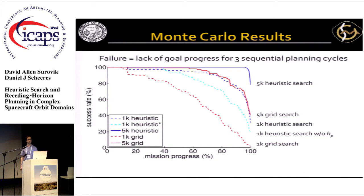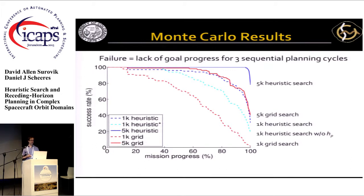To quantitatively show how all of these things are affecting this, I ran Monte Carlo simulations of mission plans using different search resolutions and different features turned on or off. If you use a good resolution and the heuristic with all the bells and whistles, then you get almost all of the goals done almost all of the time. Moving to a grid search or lower resolution costs a lot of performance. You can also see that the extra heuristic for making temporal decisions has a very important effect on the consistency of the planner.